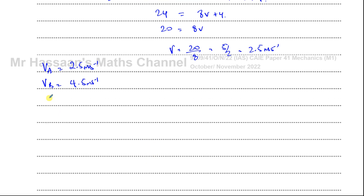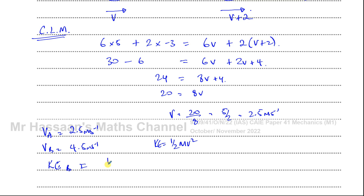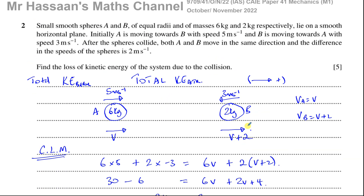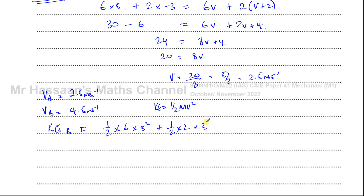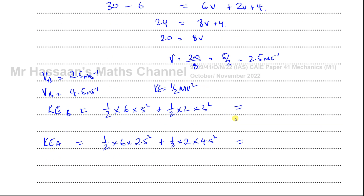Now we can find the kinetic energy before and after the collision. Kinetic energy equals half times mass times velocity squared. Before the collision: KE = (1/2)(6)(5²) + (1/2)(2)(3²). After the collision: KE = (1/2)(6)(2.5²) + (1/2)(2)(4.5²). Subtracting these two values gives the loss of kinetic energy.